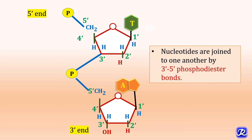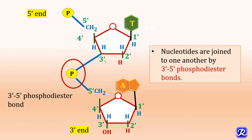Nucleotides are joined to one another by 3'-5' phosphodiester bonds. This bond is formed between the 3' carbon of one nucleotide and the 5' carbon of another nucleotide. 5'N refers to the terminal residue whose C5 is not linked to another nucleotide, and 3'N means the terminal residue whose 3' carbon is not linked to another nucleotide.